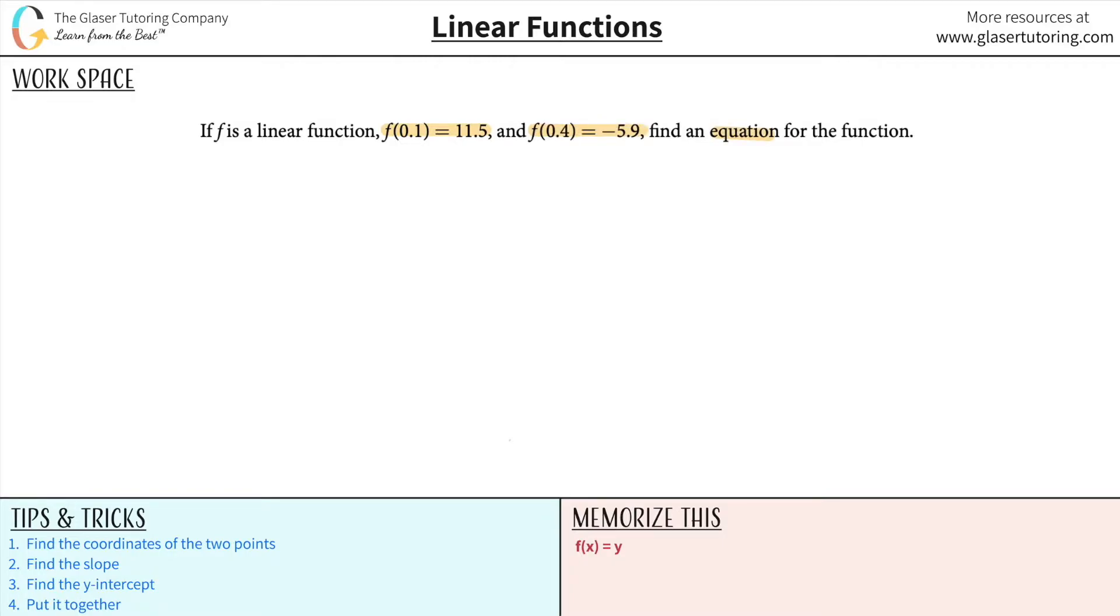All righty then. So what we first need to do is understand how to interpret these two pieces. We have two different pieces to the problem. And what I want you to memorize, although it's not technically correct, I think it works beautifully to help organize how you view this. How I want you to view this is f of x equaling y.